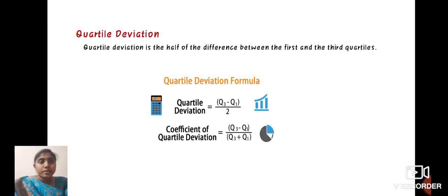Quartile deviation is the half of the difference between the first and third quartiles, which means Q3 minus Q1. Quartile deviation equals Q3 minus Q1 divided by 2, and the coefficient of quartile deviation equals Q3 minus Q1 divided by Q3 plus Q1.